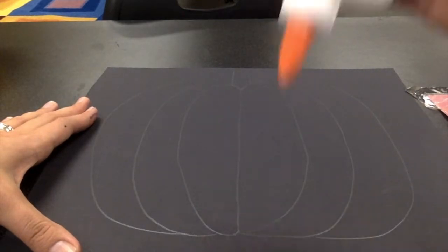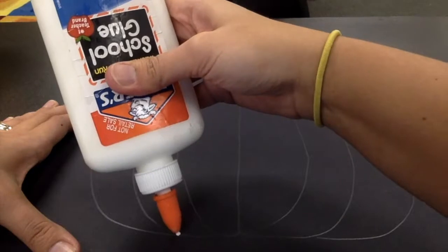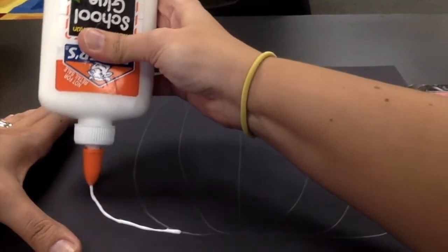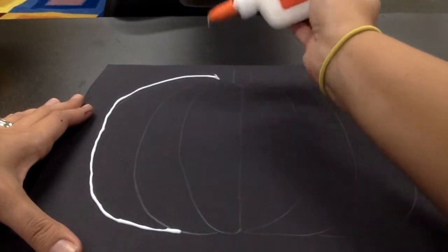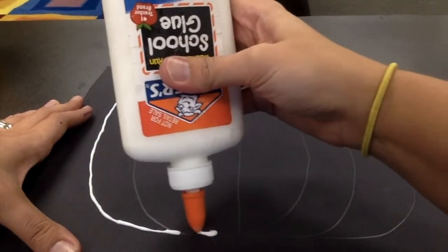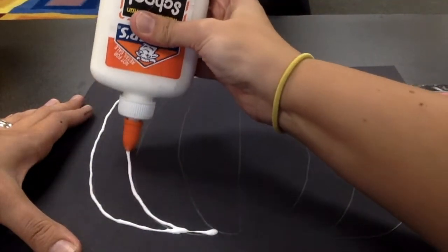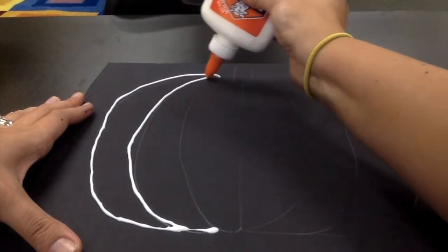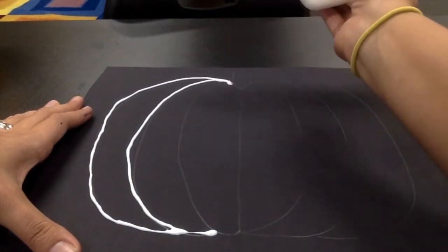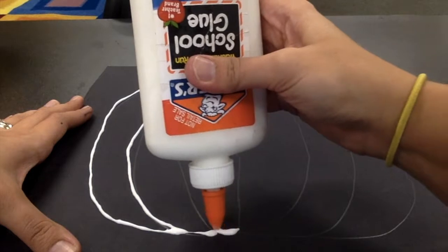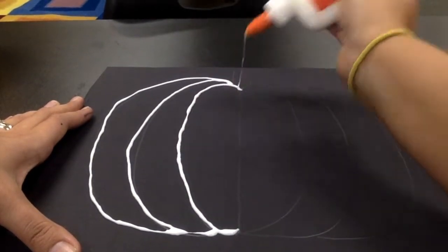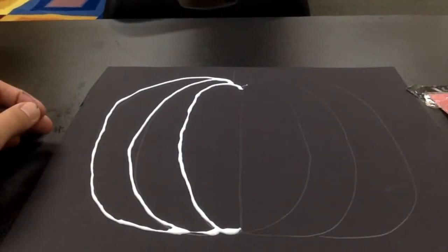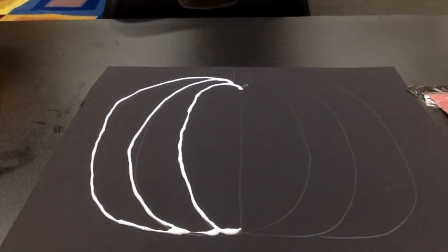I'm just going to trace my lines with glue. This is going to be really cool next week when you come in. I'm lifting up my glue bottle, so I do one line and then I lift up my glue bottle. I'm going to finish this and then I'll show you what it looks like.